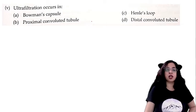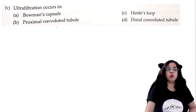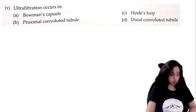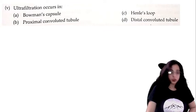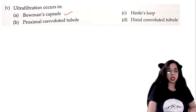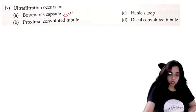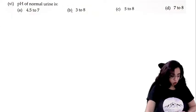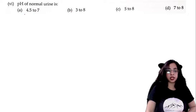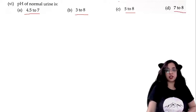Glomerular filtration occurs in: Bowman's capsule, Henle's loop, proximal convoluted tubule, or distal convoluted tubule? The answer is Bowman's capsule. Next: the pH of normal urine is — 4.5 to 7, 3 to 8, 5 to 8, or 7 to 8? The correct answer is 5 to 8.